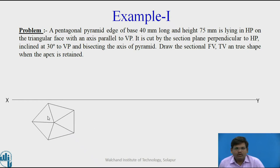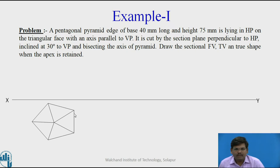Drawing the pentagon with an edge towards the right and corner towards the left is based on the condition that it is resting on a triangular face. As the pyramid rests on the triangular face, we have drawn this edge towards the right and corners towards the left. You can draw the pentagon by using any method, either the circle method or by finding the exterior angle method. The base side is 40 mm.